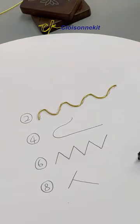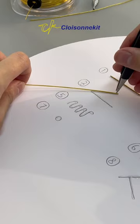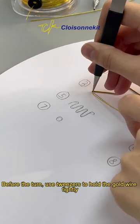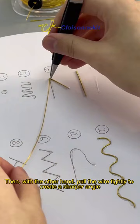Next is the third pattern with sharp angles. Before the turn, use tweezers to hold the gold wire tightly. Then, with the other hand, pull the wire tightly to create a sharper angle.